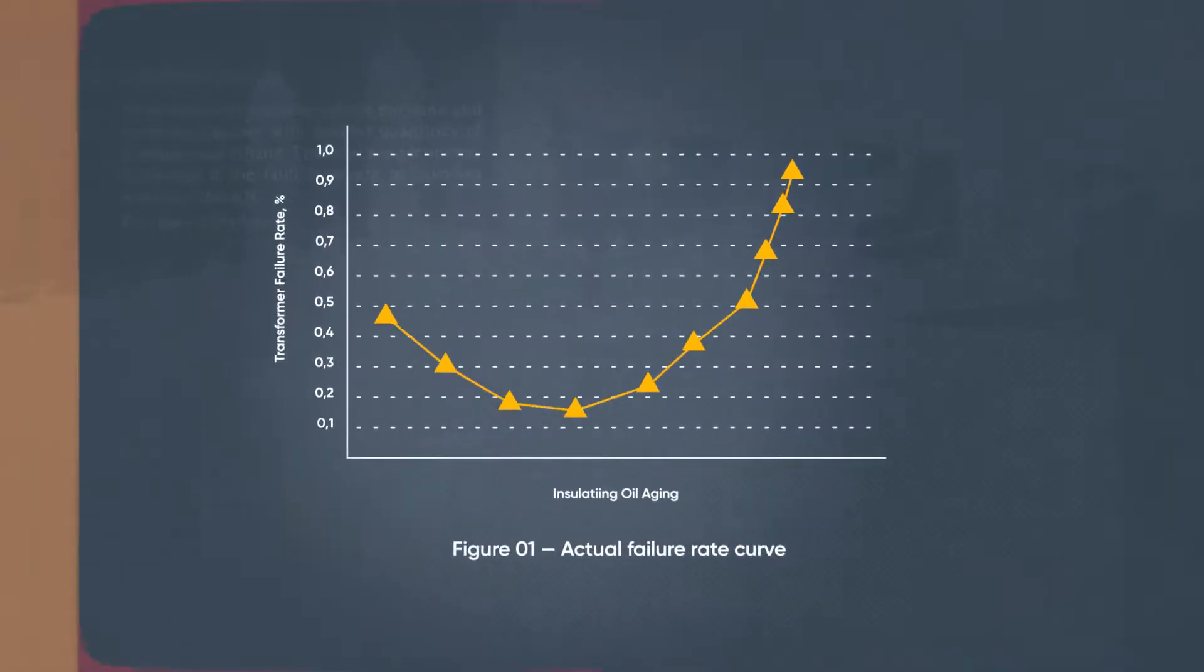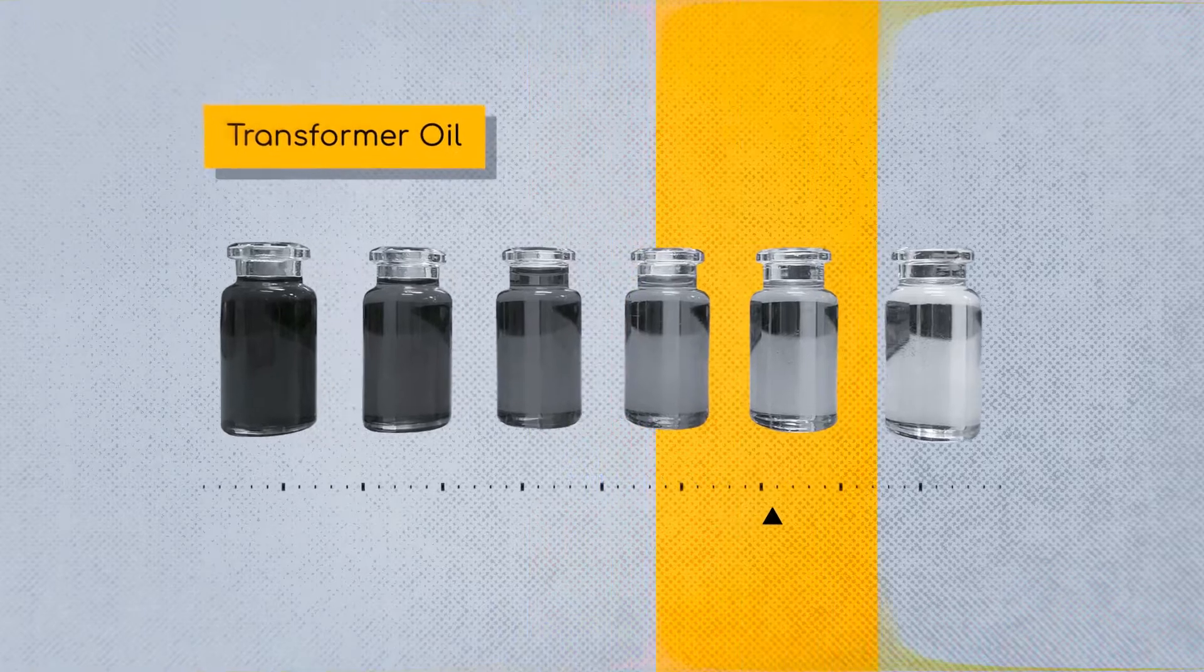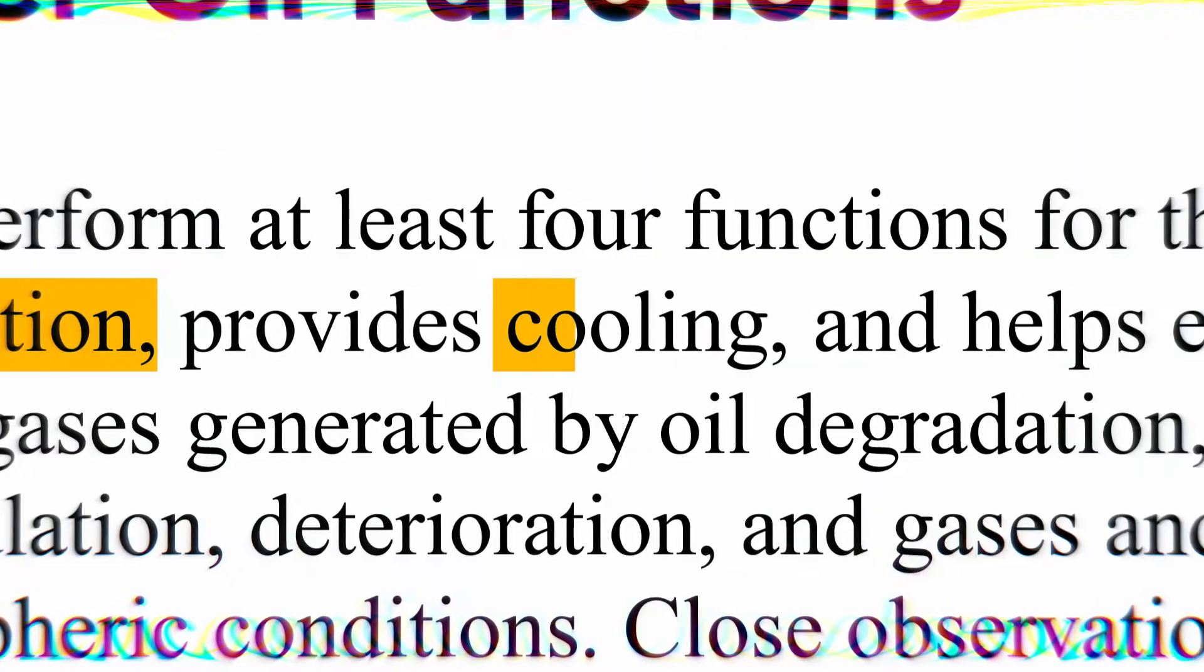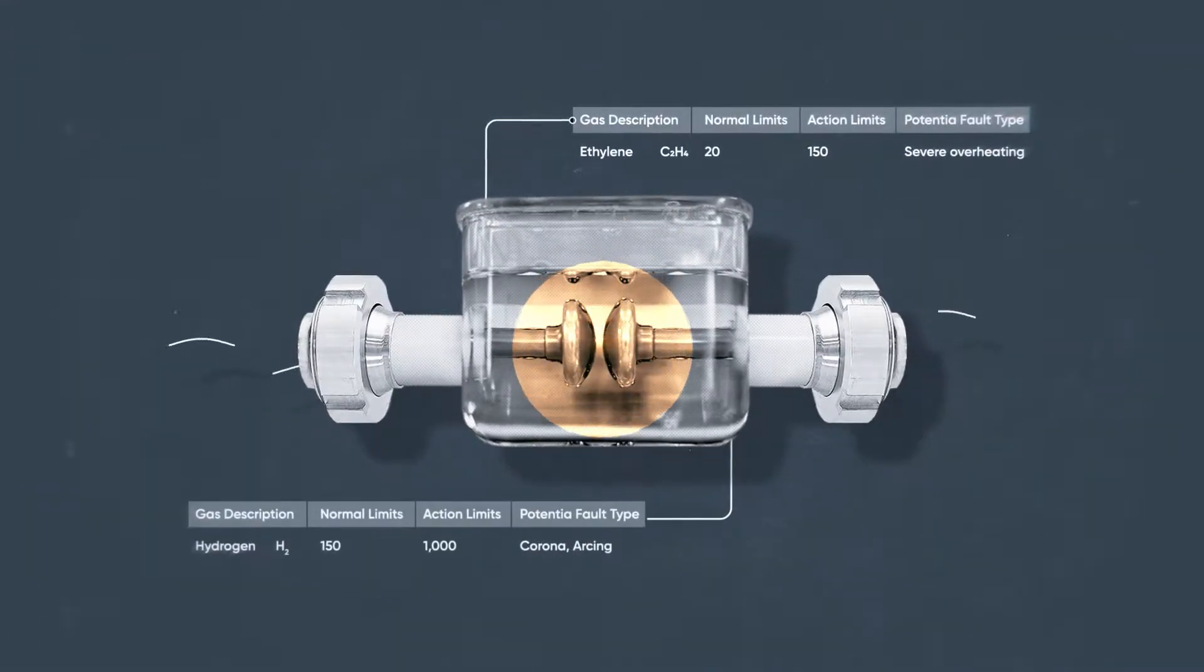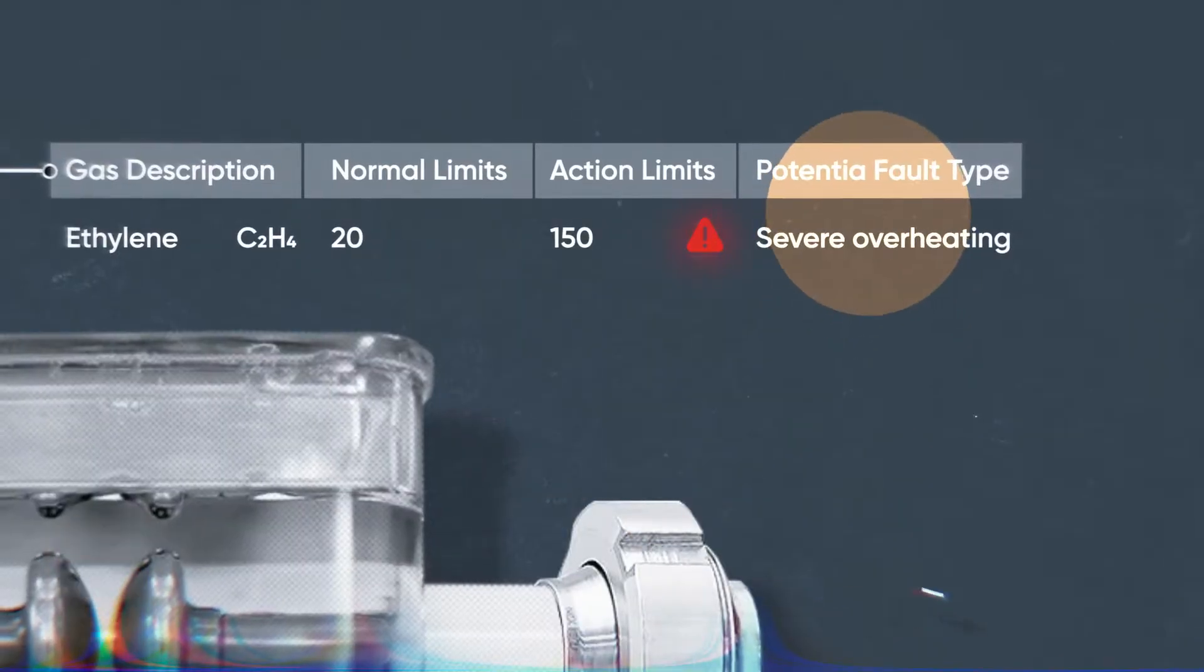The overall performance of transformers highly depends on the condition of the oil, which plays the role of a dielectric, heat transfer agent, and arc quencher. That is why regular monitoring of the oil enables potential problems to be diagnosed.